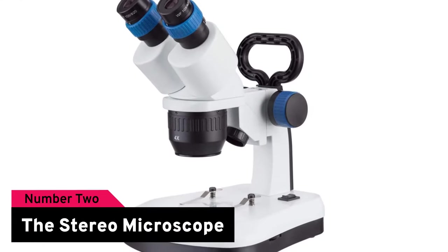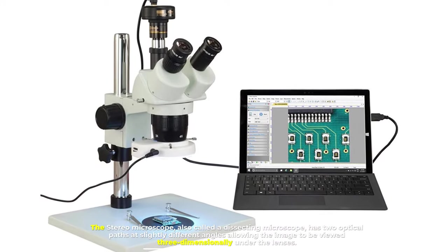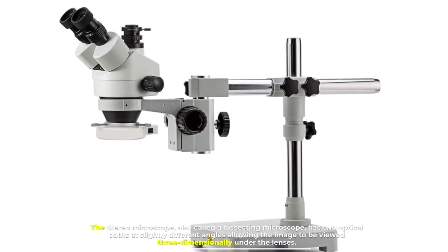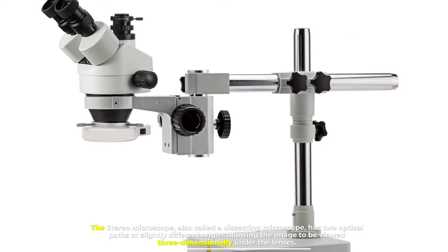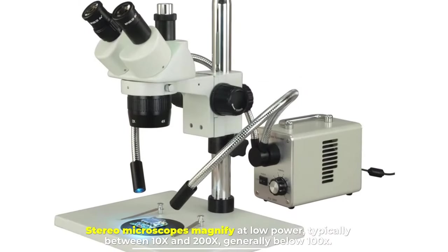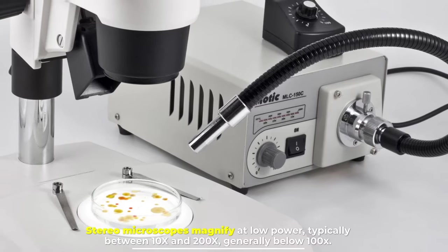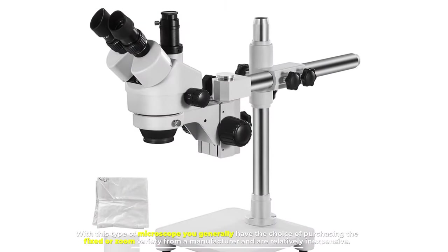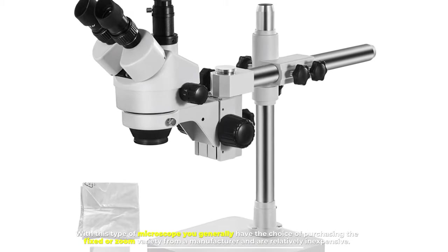Number two: the stereo microscope. Also called a dissecting microscope, it has two optical paths at slightly different angles, allowing the image to be viewed three-dimensionally. Stereo microscopes magnify at low power, typically between 10x and 200x, generally below 100x. With this type, you have the choice of purchasing fixed or zoom varieties from manufacturers, and they are relatively inexpensive.